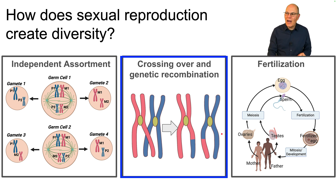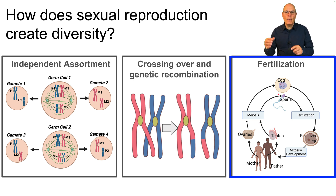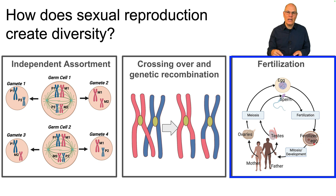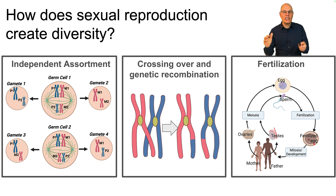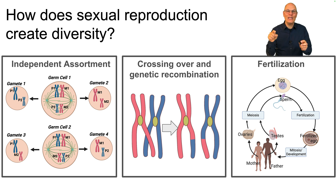And then finally, there's fertilization, where sperm and egg from different individuals combine in a fertilized egg — that is the third generator. And that's why sexual reproduction creates diversity. It explains you, it explains me. Biology — is it amazing or what?